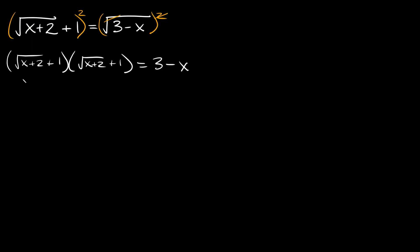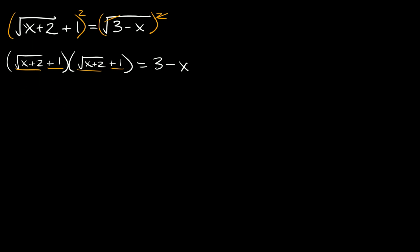Now we can foil these two together because we have basically four terms: the square root of x plus 2, a positive 1, the square root of x plus 2, and a positive 1. First, the square root of x plus 2 times the square root of x plus 2 — that's the square root of x plus 2 squared — and those cancel each other out, leaving just x plus 2. Then the square root of x plus 2 times positive 1 gives positive square root of x plus 2, same for the other cross term, and 1 times 1 is 1. That's equal to 3 minus x.